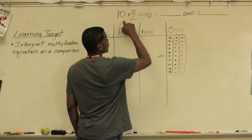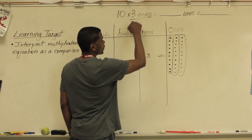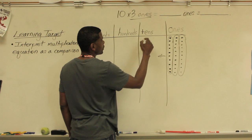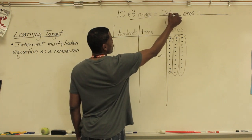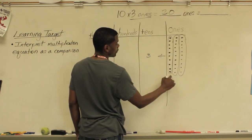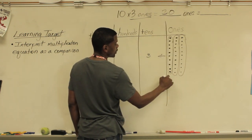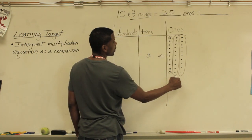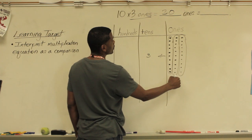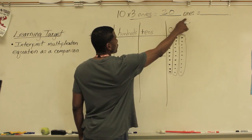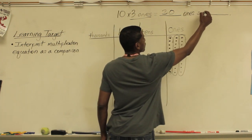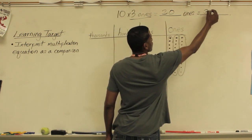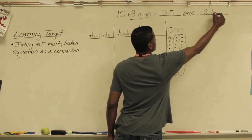So three sets of ones would equal three tens. So we have ten times three. Three tens would equal thirty ones. So if you count this up — ten, twenty, thirty ones. Thirty ones equals three tens.